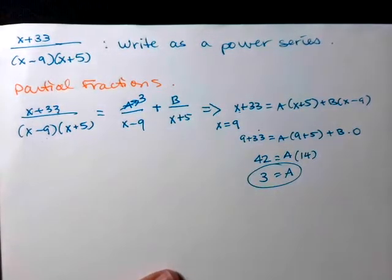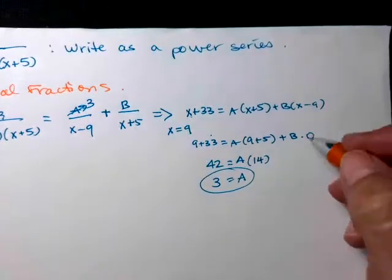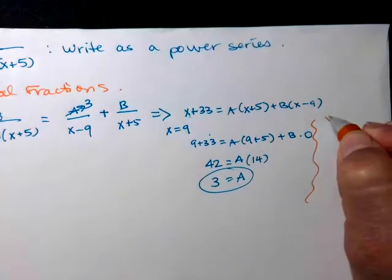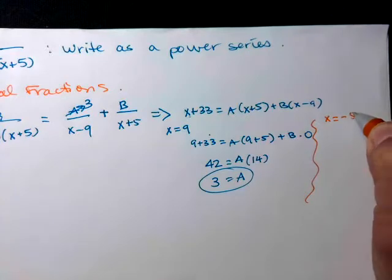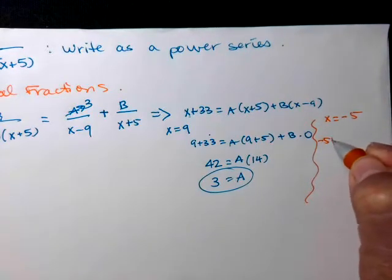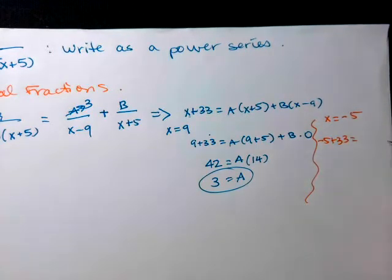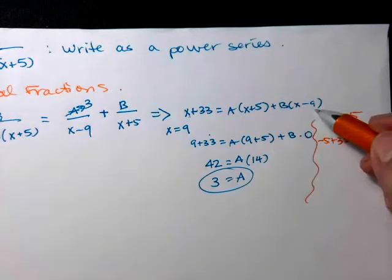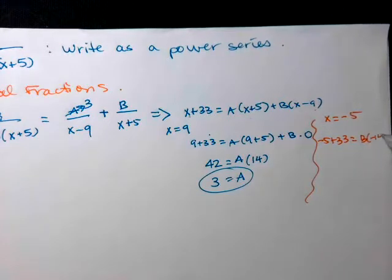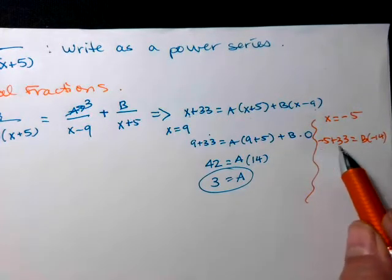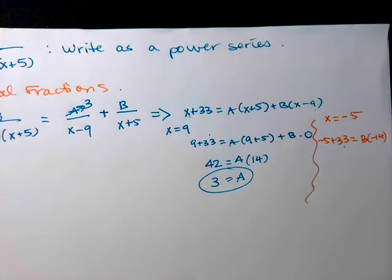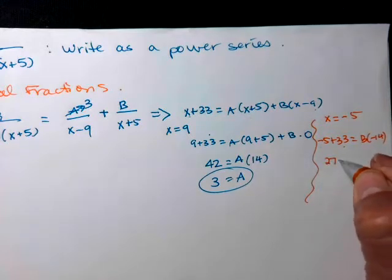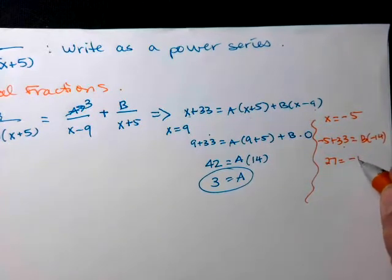And now we'll plug in a different x value and come up with the value for B. Do y'all see what we're going to plug in for x this next time? Sure. Negative 5. So negative 5 plus 33 equals, and I'm going to try to scrunch it into this last little half inch of paper that I have. So I know my A is going away. So then my B is times negative 14. So negative 5 plus 33 is 27.